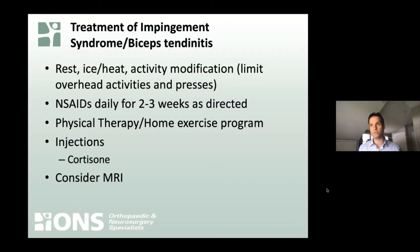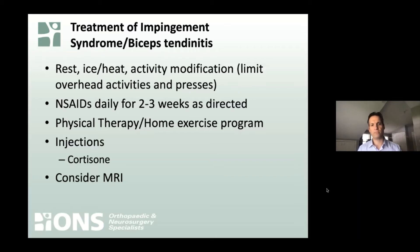On occasion we will do injections — typically a cortisone shot — and sometimes we'll consider something like platelet-rich plasma. We'll usually do that if you can't improve using the other methods. In some cases where people are not getting better or there are other concerning findings, we'll consider an MRI.